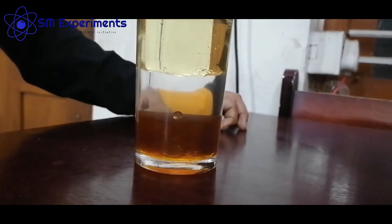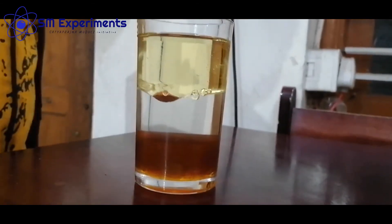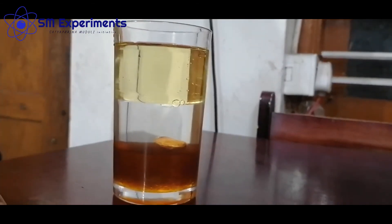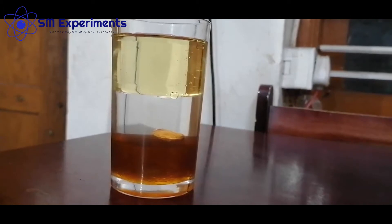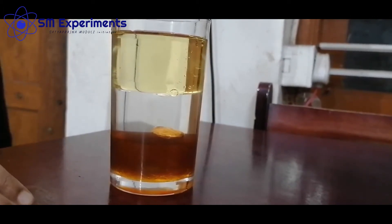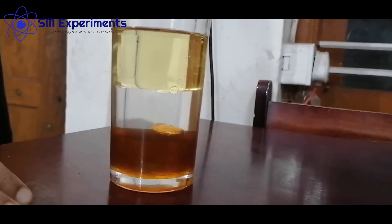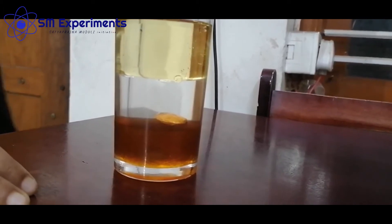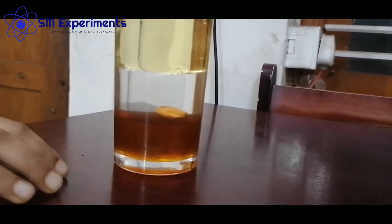Now I put one almond. You can see the almond sinks in the water and floats on the honey because its density is heavier than water but less than honey.